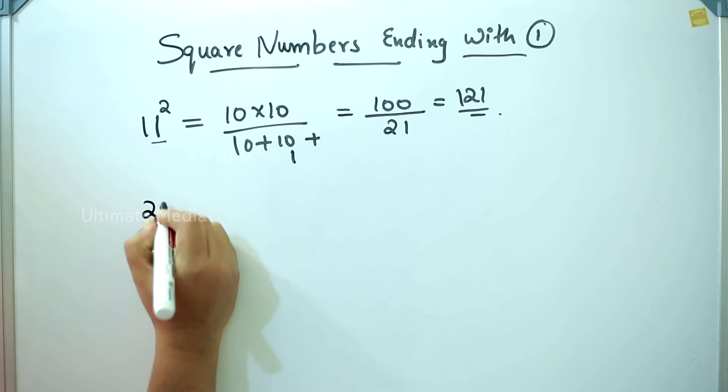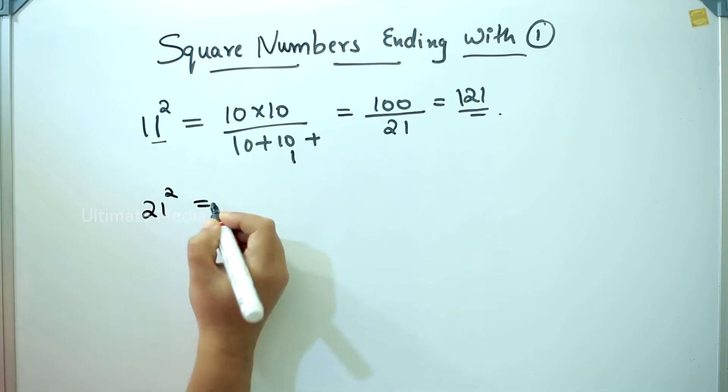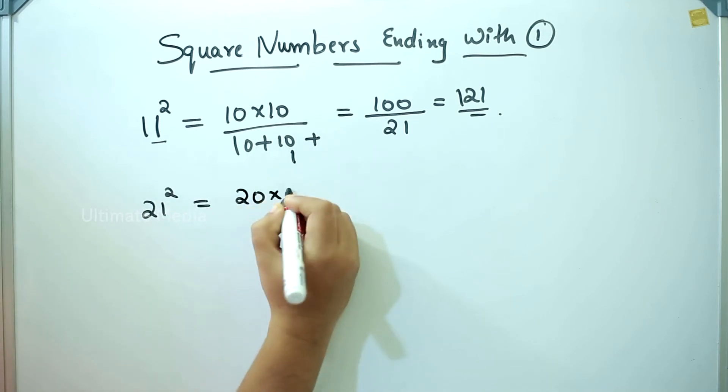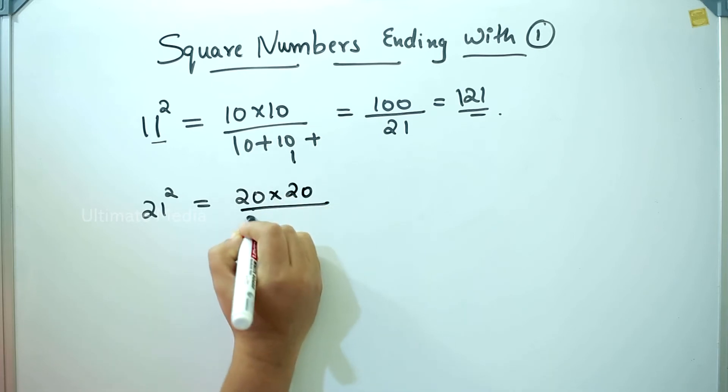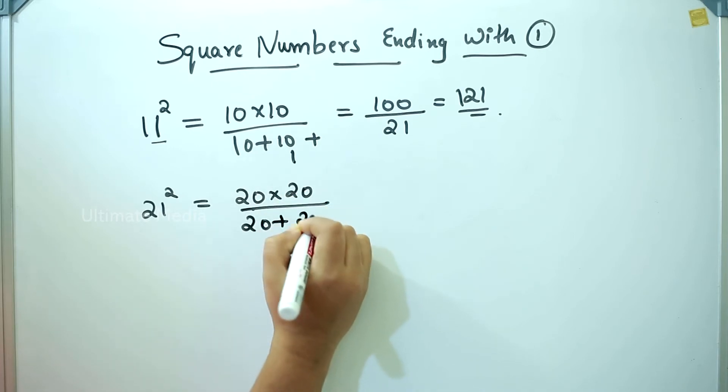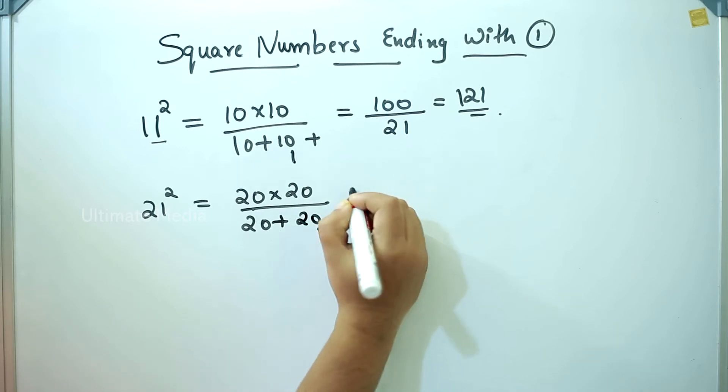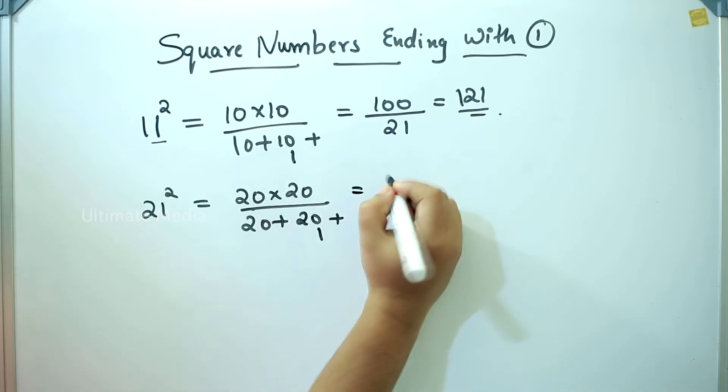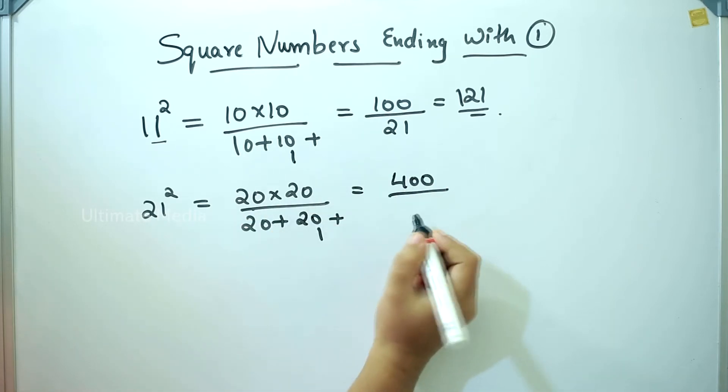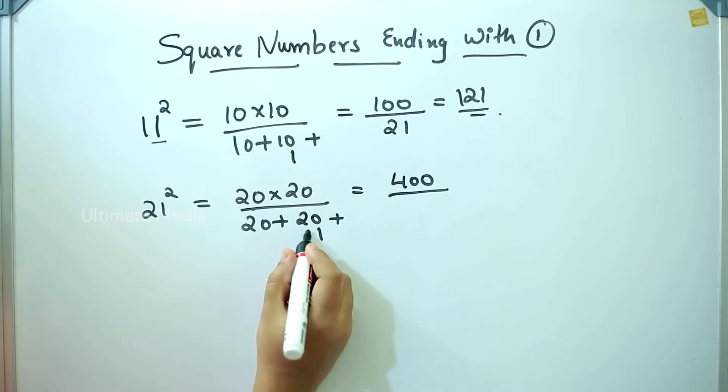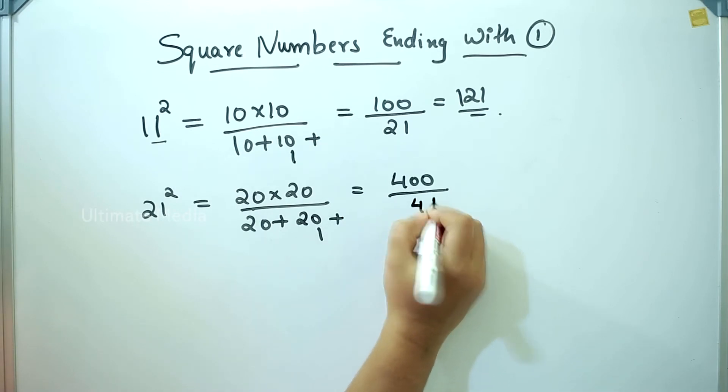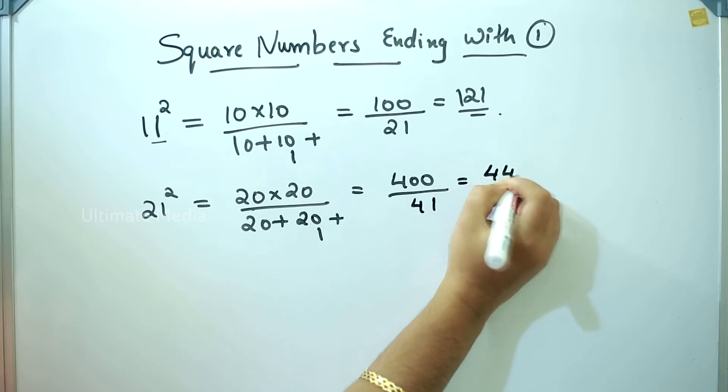Next, 21 square. The formula means 20 into 20 divided by 20 plus 20 plus 1. 20 into 20 is 400. Next, 20 plus 20 is 40. The answer is 441.